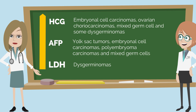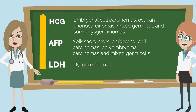Many of the germ cell tumors can be identified with hormonal or enzymatic activity. HCG can be found elevated in embryonal cell carcinomas, ovarian choriocarcinomas, mixed germ cell, and some dysgerminomas. AFP is elevated in yolk sac tumors, embryonal cell carcinomas, polyembryoma carcinomas, and mixed germ cells. LDH is elevated in dysgerminomas. Being aware of these markers can help when trying to identify if a cyst on a patient may be benign or malignant.